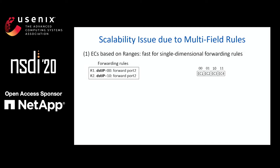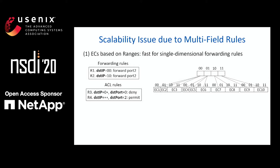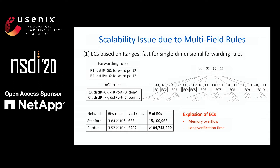Let's see why it's challenging to achieve a scalable update for equivalent classes when there are multiple match fields. We can represent the equivalent class with a range or interval. For example, with two forwarding rules matched on a 2-bit IP address, we only have four equivalent classes. But if we consider two ACL rules that match on destination port as well, we need a second layer to further partition the equivalent classes. So the number of equivalent classes will be a product of the number of ranges for each field, and this number can eventually explode — even for a producing set of less than 3,000 ACL rules, there are already over hundreds of millions of equivalent classes, which can overwhelm memory and incur a long verification time.